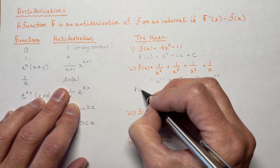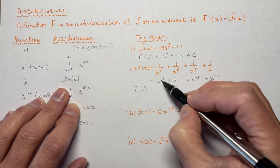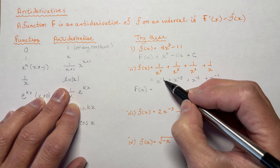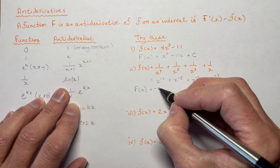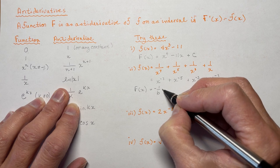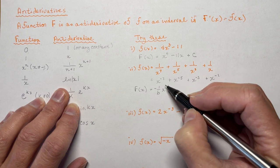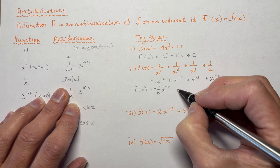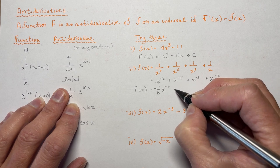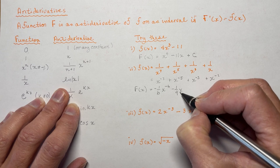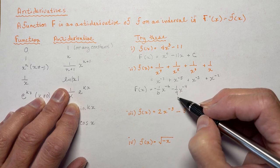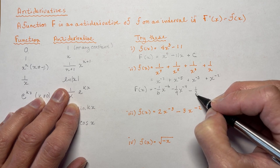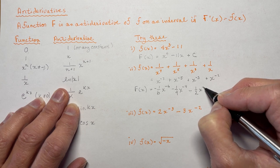So now let's find the antiderivative term by term. Make sure when you have a negative number you add one correctly — it's a common mistake. Adding one to minus 7 gives minus 6; dividing by minus 6 gives minus one-sixth x to the minus 6. Check: minus 6 times minus one-sixth equals 1, giving x to the minus 7. ✓ Next, adding one to minus 5 gives minus 4; dividing gives minus one-quarter x to the minus 4. Then adding one to minus 3 gives minus 2; dividing gives minus one-half x to the minus 2. Check: negative 2 times negative one-half gives plus x to the minus 3. ✓